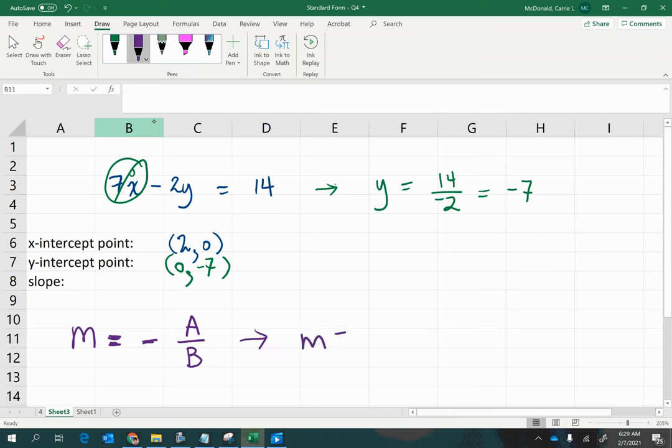That gives us m equals negative. And then what's the a value here? What's the coefficient of x? That's my a. And then in the bottom, the b.